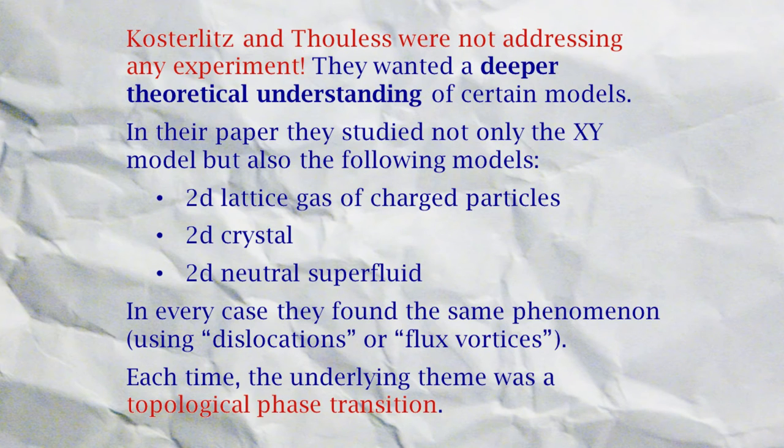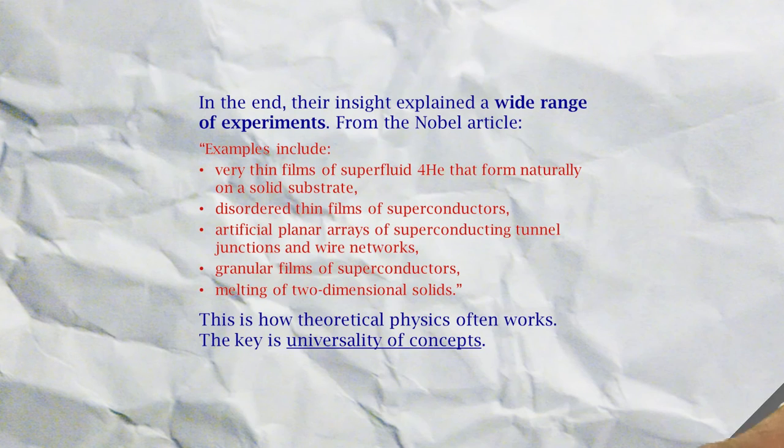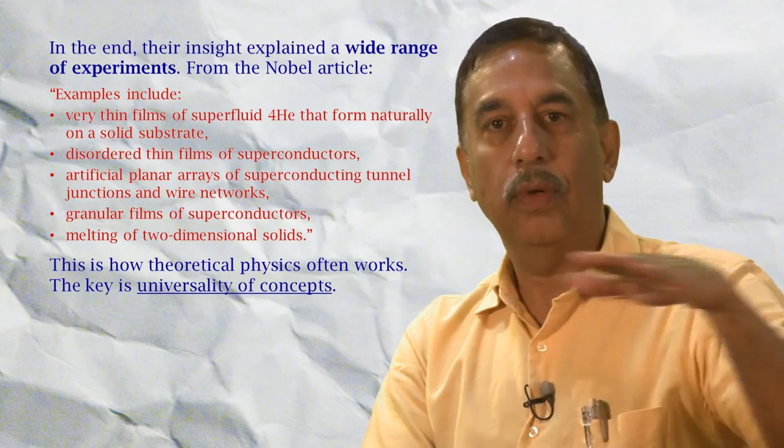In their paper they studied not only the XY model but also a 2D lattice gas, a 2D crystal, a 2D neutral superfluid. In every case, in one or another language—in the language of dislocations or in the language of flux vortices—they found exactly the same behavior. The underlying theme was a topological phase transition. This concept has come to dominate physics of two-dimensional materials and has been experimentally realized in many different systems: thin films of superfluid helium, disordered thin films of superconductors, planar arrays of superconducting junctions, granular films of superconductors, and the melting of 2D solids. It is a very interesting fact that Kosterlitz and Thouless were not motivated to explain any particular experiment. Rather, there were a range of theoretical observations which made a picture that no one understood, and they proposed an understanding which is solid, robust, and has many experimental consequences.